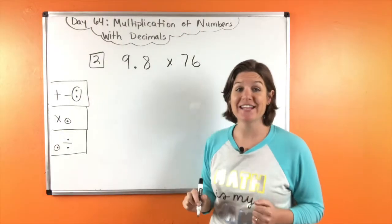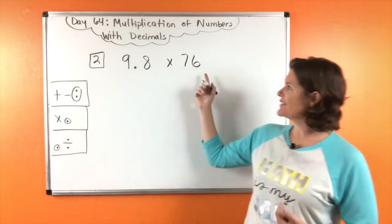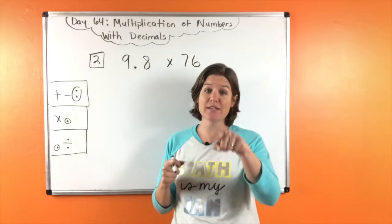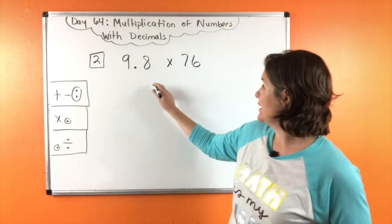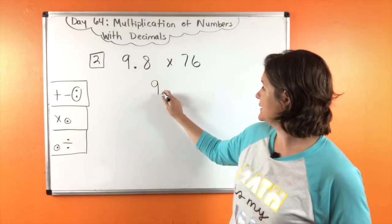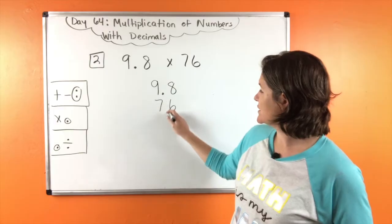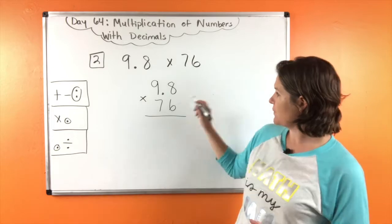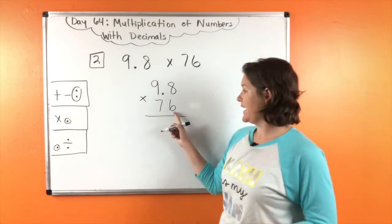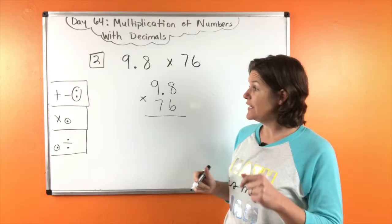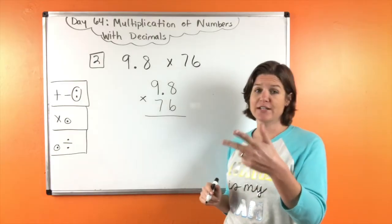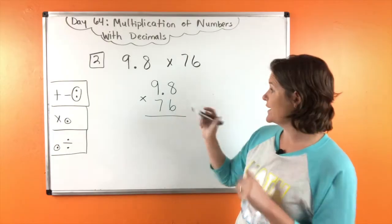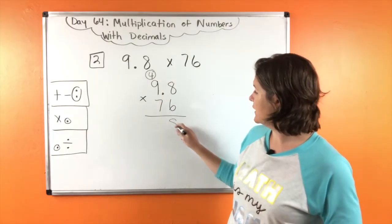Go ahead and make sure you've got this copied down, and then we'll take a look at number two. For number two, we have nine and eight tenths times seventy-six. Seventy-six does not have a decimal. When we multiply numbers with decimals, we shift it at the end. So I'm just going to go ahead and put nine and eight tenths up top — I'm really just lining up my digits, not even caring about the decimal place here. And multiply. Six times eight: six, twelve, eighteen, twenty-four, thirty, thirty-six, forty, forty-eight. So forty-eight.